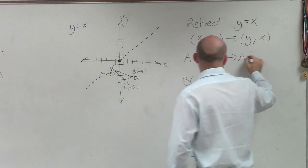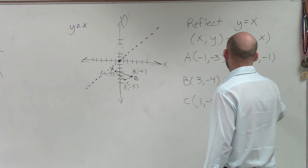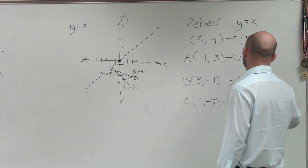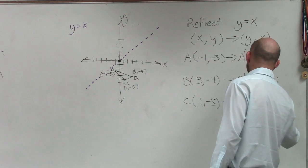So now, my a prime is going to be negative 3, negative 1. My b prime is going to be negative 4, 3. And my c prime is going to be negative 5, 1.